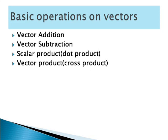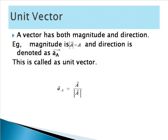Now we are going to see the basic operations on vectors: vector addition, vector subtraction, scalar product or dot product, and vector product or cross product. Before going to the operations on vectors, let us see what is a unit vector. A vector has both magnitude and direction. The magnitude is indicated by the modulus of a vector and the direction is denoted as small a suffix capital A vector. The unit vector is given as: â = A⃗ / |A⃗|. This is the formula for unit vector. The unit vector gives the direction of that vector.